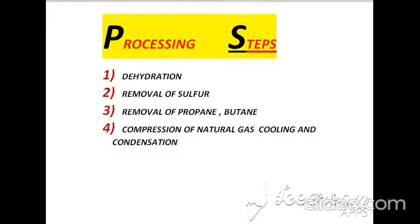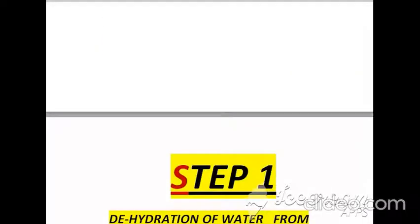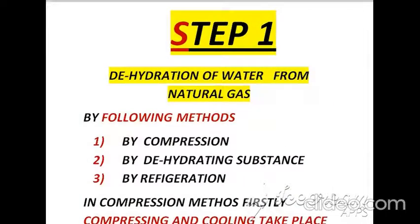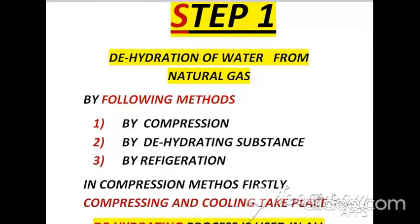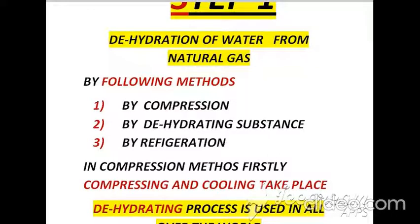According to processing steps: the first is dehydration, the second is removal of sulfur, the third is removal of propane and butane, and the fourth is compression, cooling, and condensation of natural gas. Dehydration of water from natural gas proceeds by the following methods: compression, use of dehydrating substances, and refrigeration process.